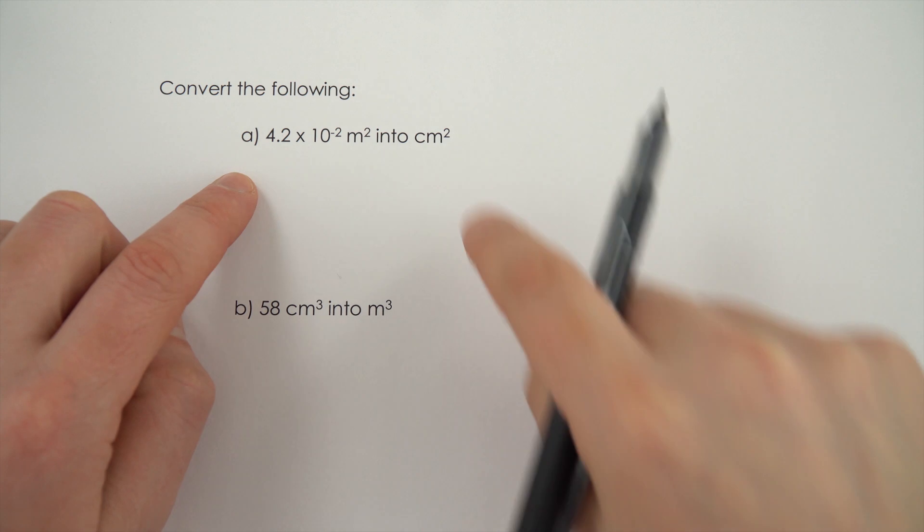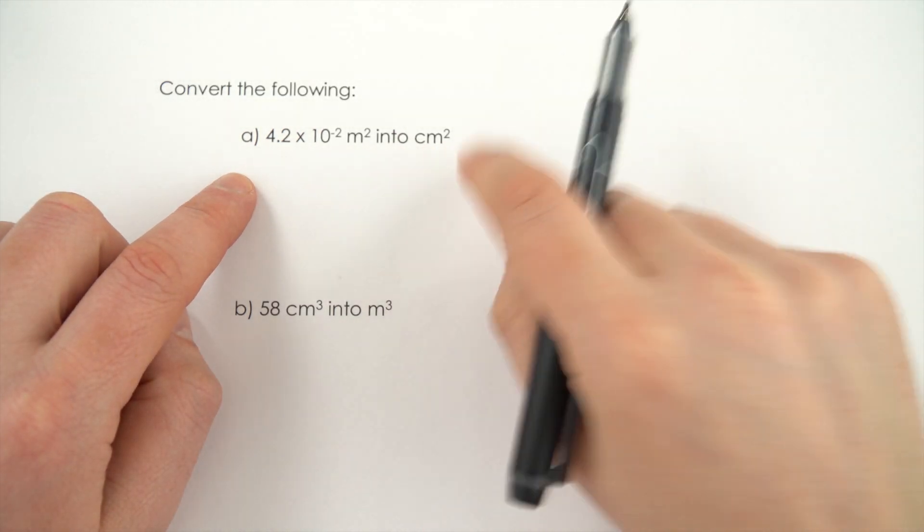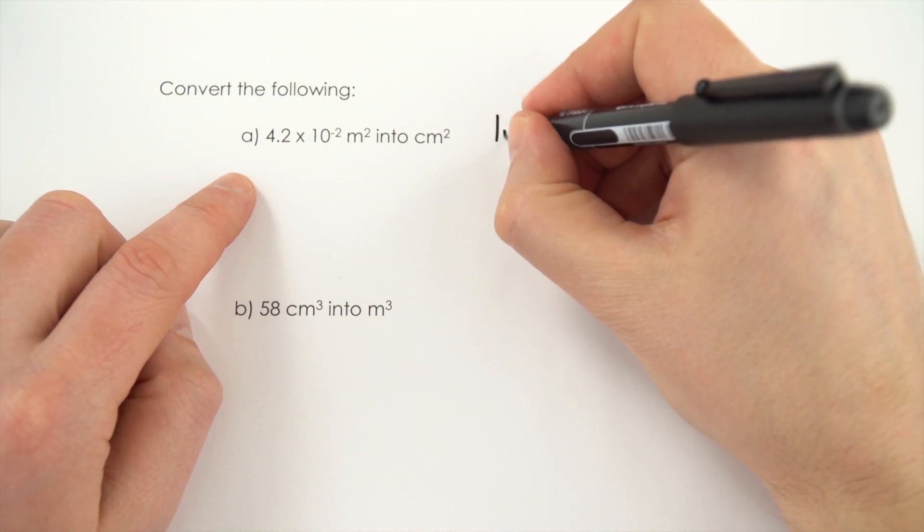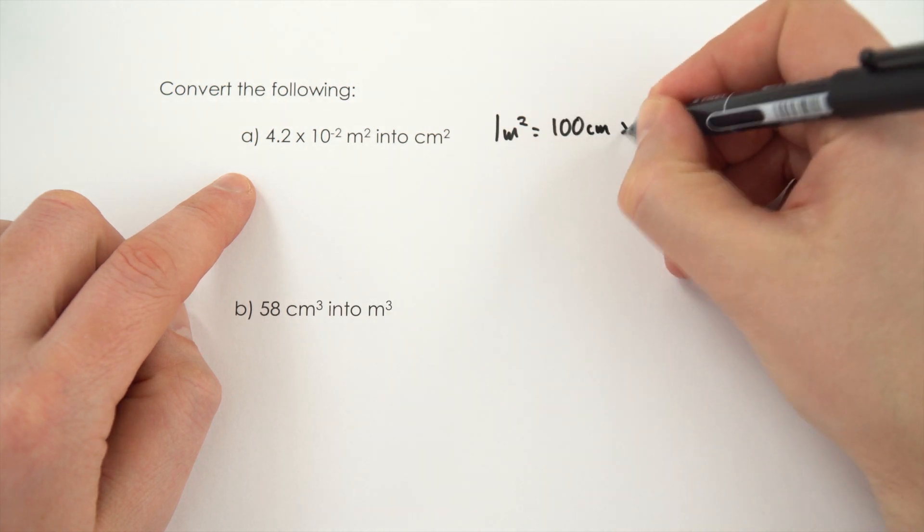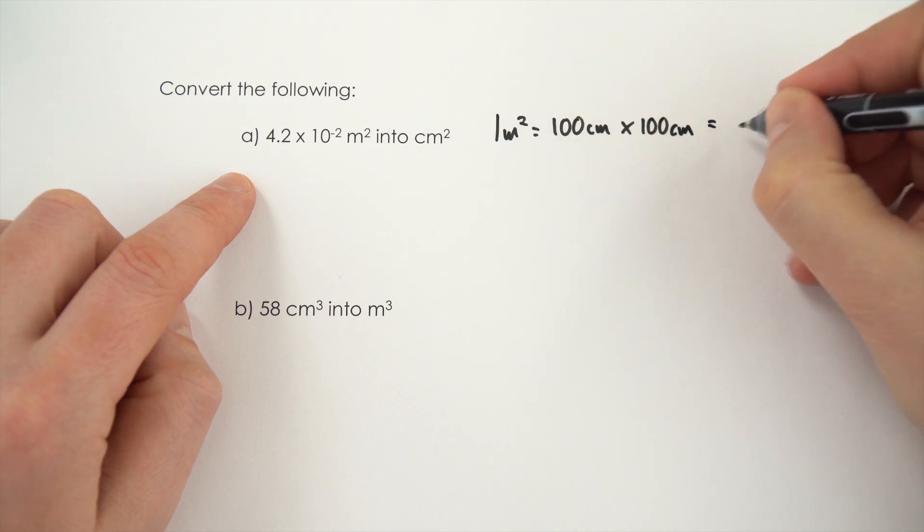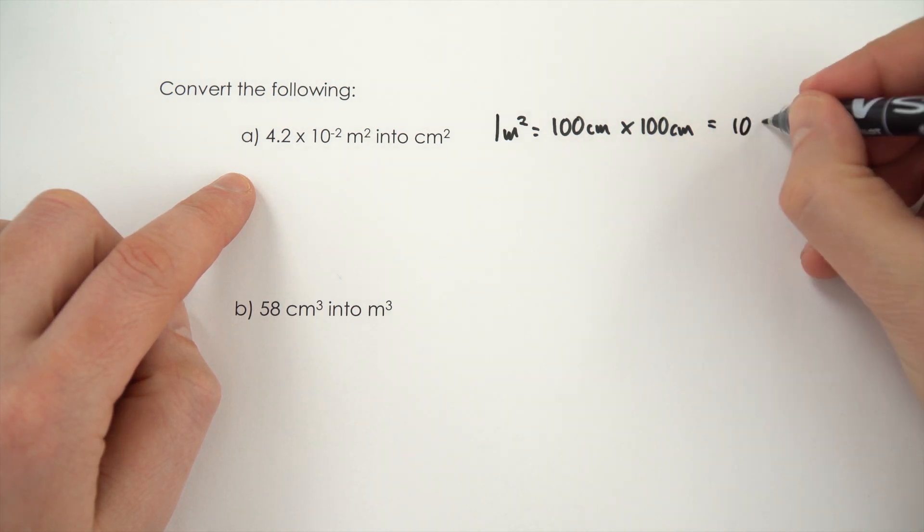In this example we need to convert from one area to another. Now we've got to remember that if you have a square metre, this is made out of a hundred centimetres by a hundred centimetres, which means in one square metre we've then got 10,000 centimetres squared.